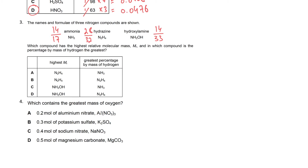For percentage by mass of nitrogen: 14/17 = 82.4% and 28/32 = 87.5%, so hydrazine has the highest nitrogen percentage. For hydrogen percentage: ammonia gives 17.6%, hydrazine gives 12.5%, and hydroxylamine gives 9%. So ammonia has the highest hydrogen percentage by mass, while hydroxylamine has the greatest Mr.